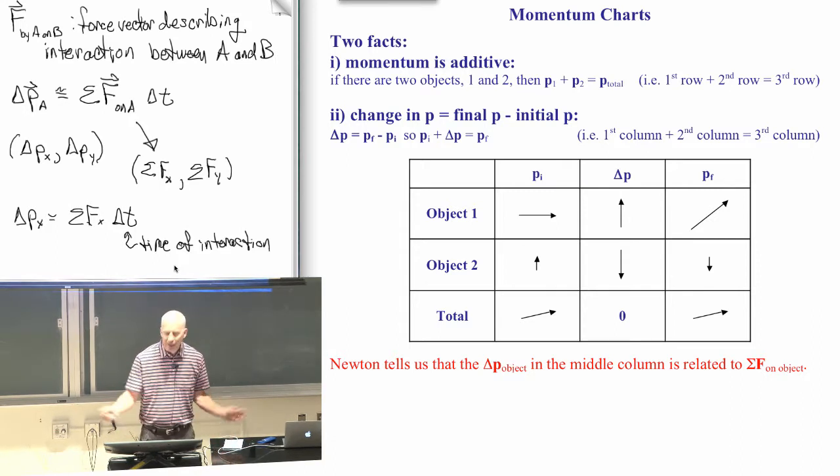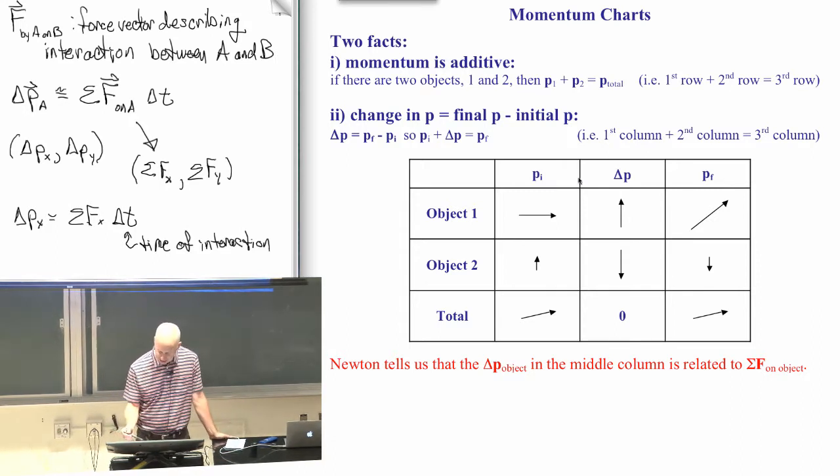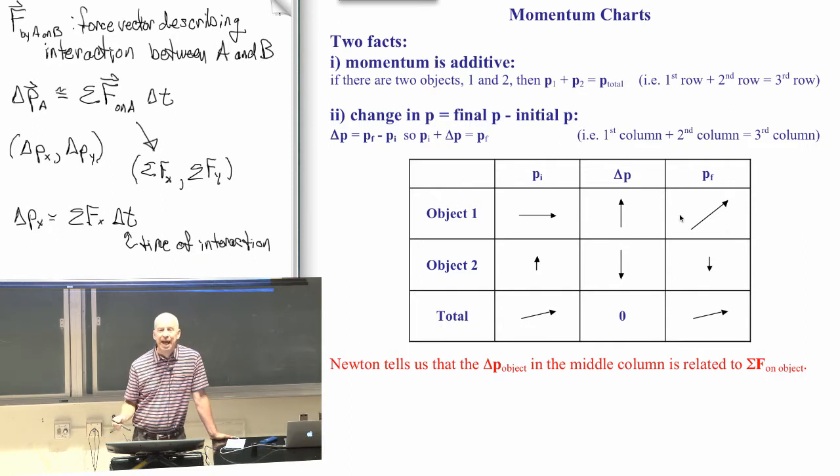So what does this momentum chart tell you? It gives you a way of calculating two things that are really important. One is, what's the momentum at the end for two objects? That might be something interesting. Given that these two objects interacted with each other, what's the momentum of the two at the end?